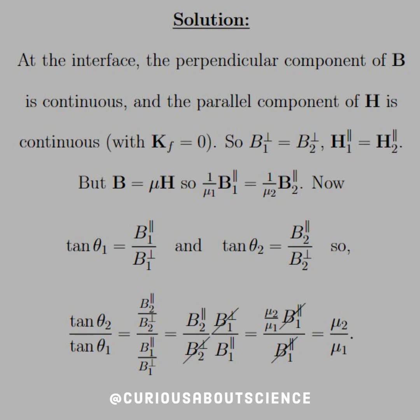But since our boundary conditions state that we are continuous at the perpendicular, this means that B₁ perpendicular equals B₂ perpendicular, we can cancel the B₂ and B₁ perpendicular components.